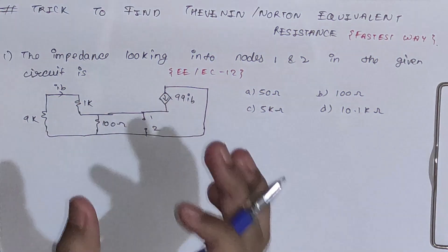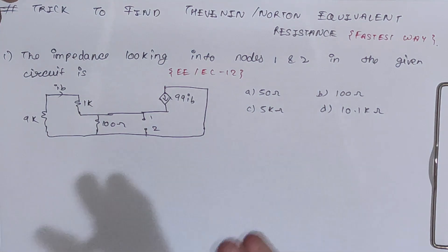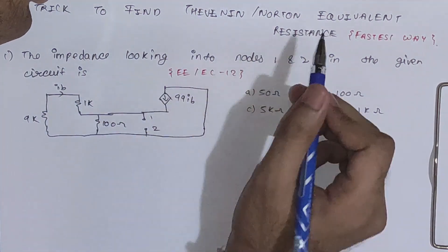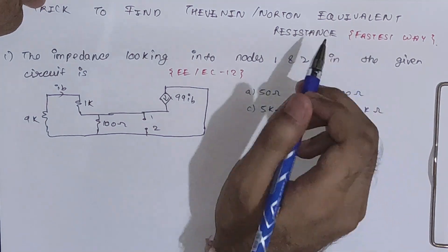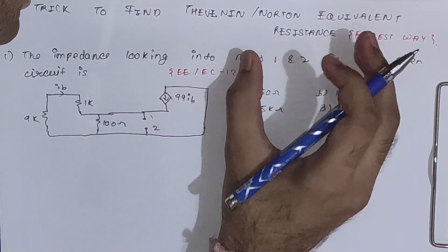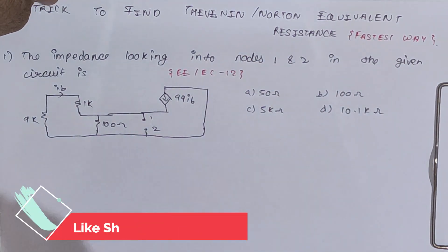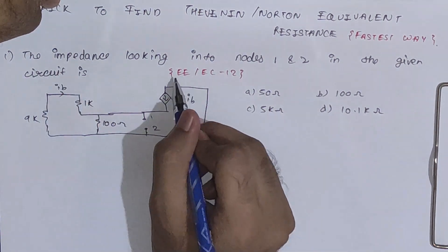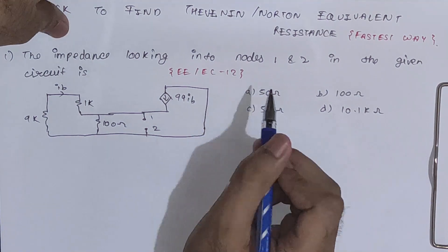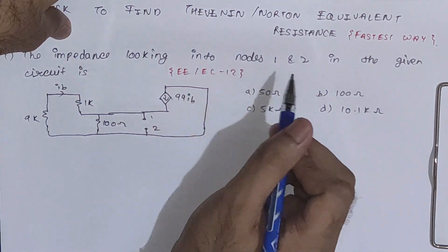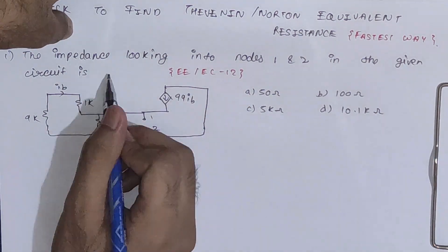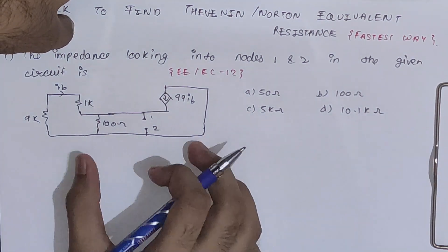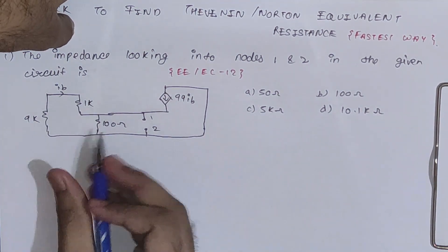Hello friends, welcome back to GATE short trick series. We are back with one more interesting trick — to find the Thevenin or Norton equivalent resistance. This is the fastest way you will ever see. Let's start with the first sum, and there we will see the trick. The first sum is from EE/EC 2012: the impedance looking into nodes 1 and 2 in the given circuit.